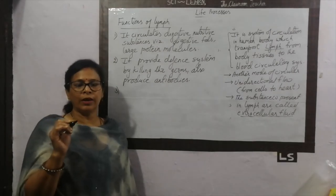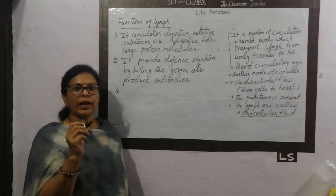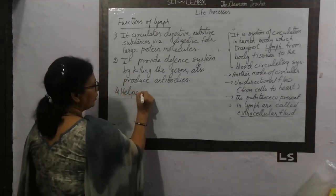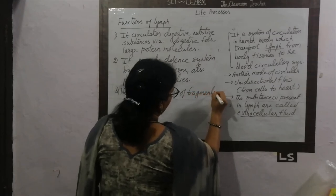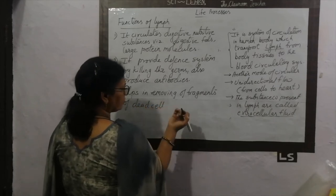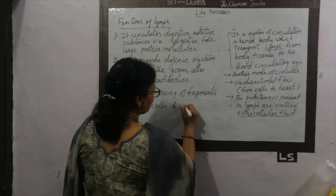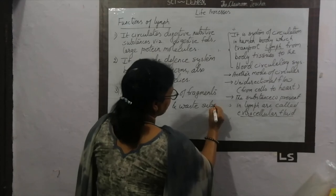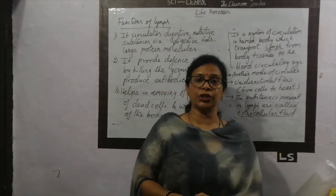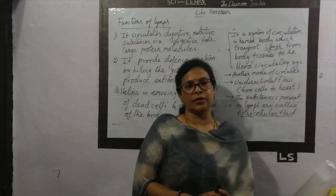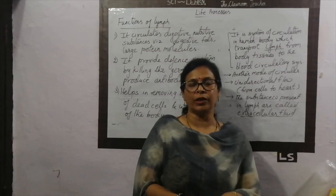The third important function of the lymph is that it helps in removing fragments of dead cells and waste substances of the body. We are now completing our topic of transportation. In transportation, there are two systems present in our body: one is called the blood circulatory system and the second is called the lymphatic circulatory system. Both processes are very much important for our body.